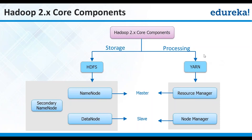Now let's understand the sub-components within each. It is a master and slave architecture. For HDFS, you have a master and a slave. For YARN, you have a master and a slave. The master component for HDFS is called the name node. As a backup for the name node, you have something called a secondary name node. The slave component for your HDFS is called a data node. Similarly, the master component for YARN is called a resource manager, and the slave component for YARN is called your node manager. It's a master and slave architecture where you have a single master and multiple slaves.